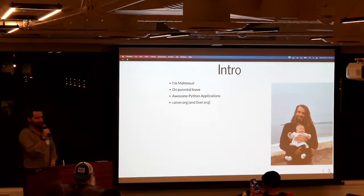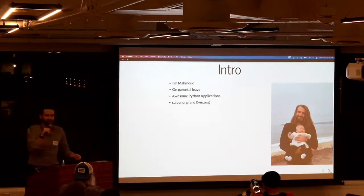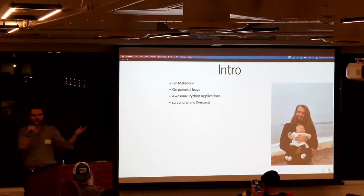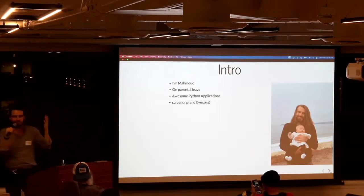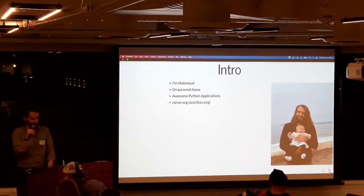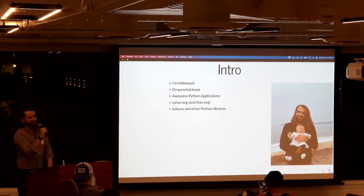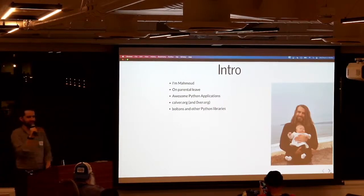I also do calver.org and satirical zerover.org. If you have any libraries at 0.22 for like years — whether it's pandas or PyIodide — you can list them on zerover.org. And I have some other libraries with a few thousand stars: Boltons and Glom, which is what I'm going to talk to you about today.